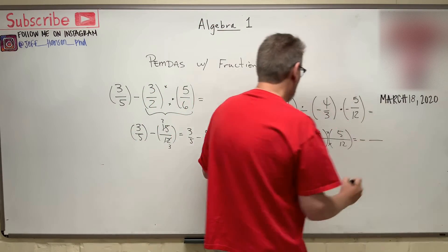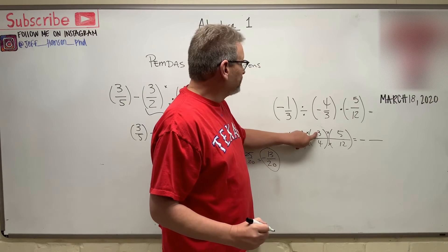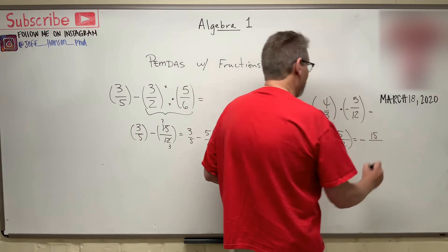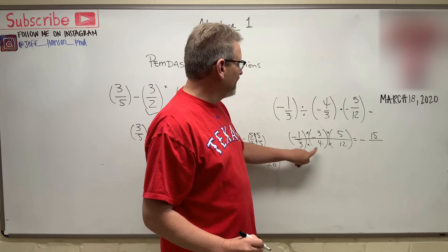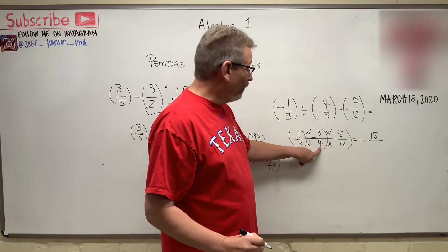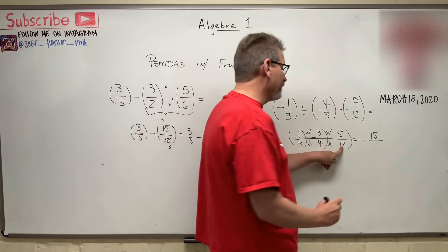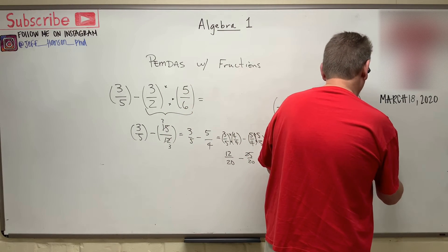On the top, I'm going to have 1 times 3 times 5, that's 15. And then on the bottom, I'm going to have 3 times 4, which is 12, times 12 more, that's 144.